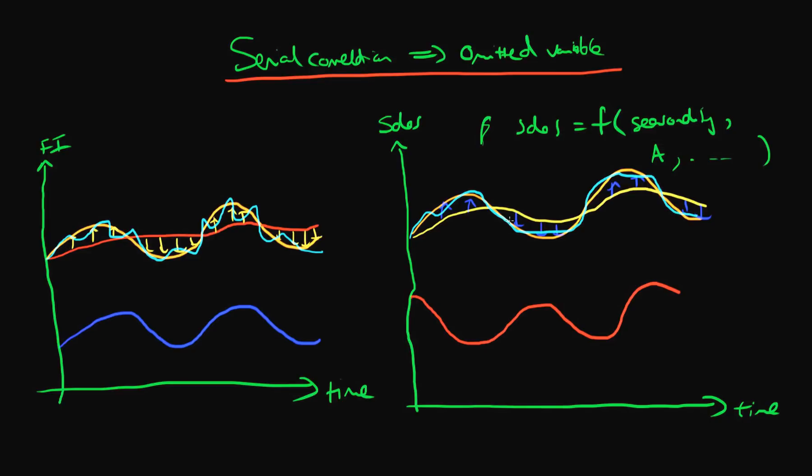But note in both of these occasions it actually hasn't been indicative of there being true serial correlation. Serial correlation has been symptomatic of a more serious problem which is that of an omitted variable which I should have been included in my model. So in that way serial correlation can be thought of as a way of detecting whether there is some other variable which I need to be including in my model.